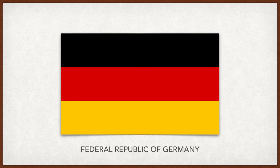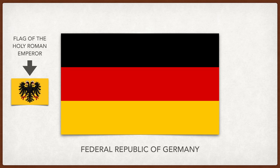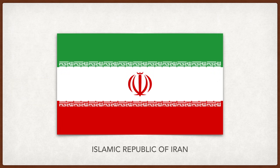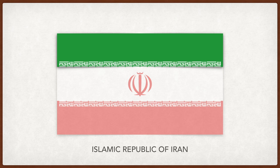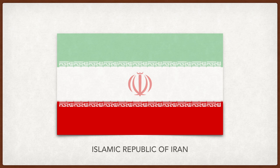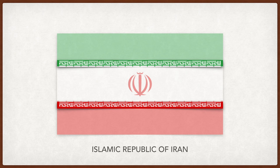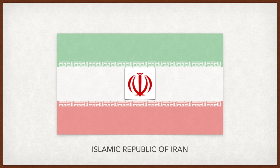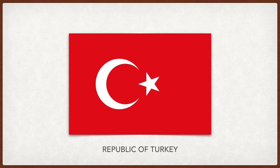Germany. The black, red, and gold have been an important part of German history as far back as the Holy Roman Empire, now symbolic of German unity. Iran. Green represents growth, happiness, and unity. White represents freedom, and red represents martyrdom. Written in white and repeated 11 times both on top and below the white stripe are the words 'Allah is the greatest' in Arabic. The emblem of Iran is a mixture of symbols, like the word Allah in the shape of a tulip, a symbol of martyrs.